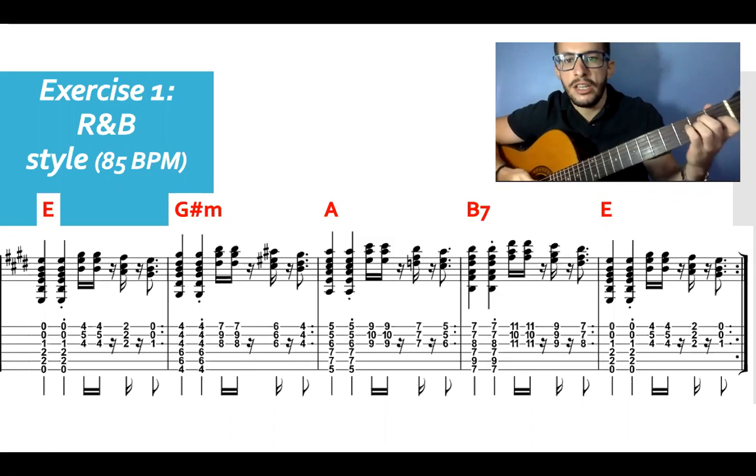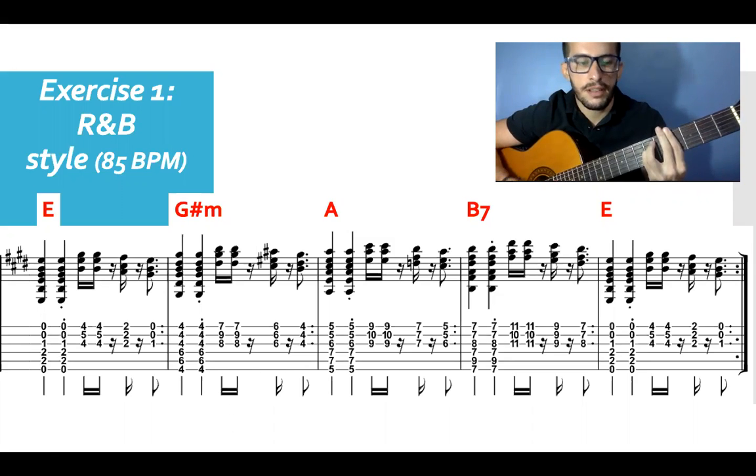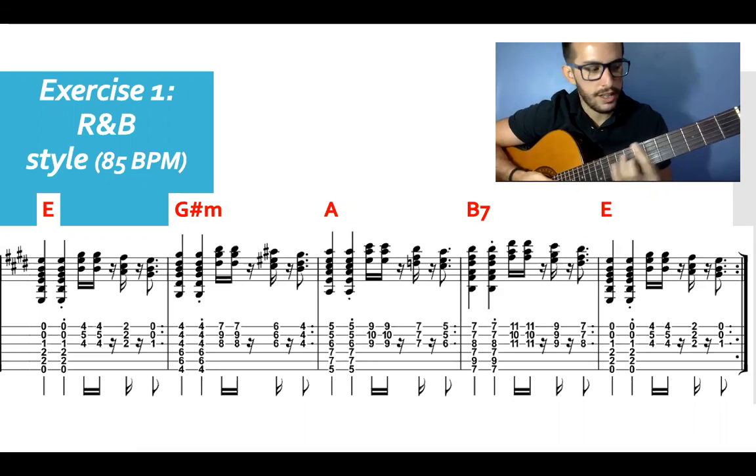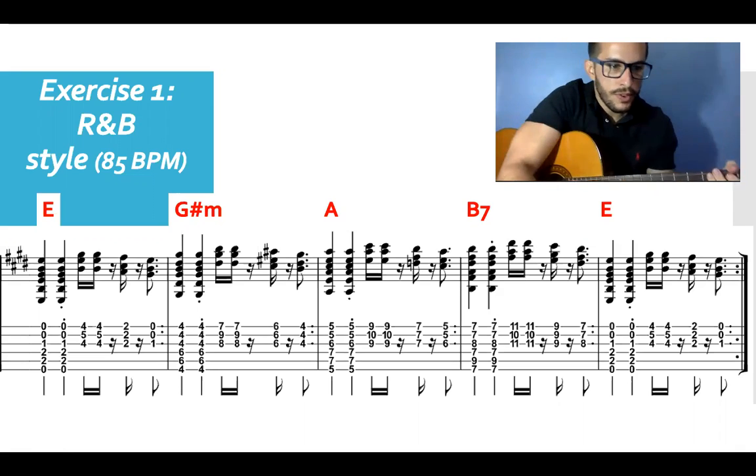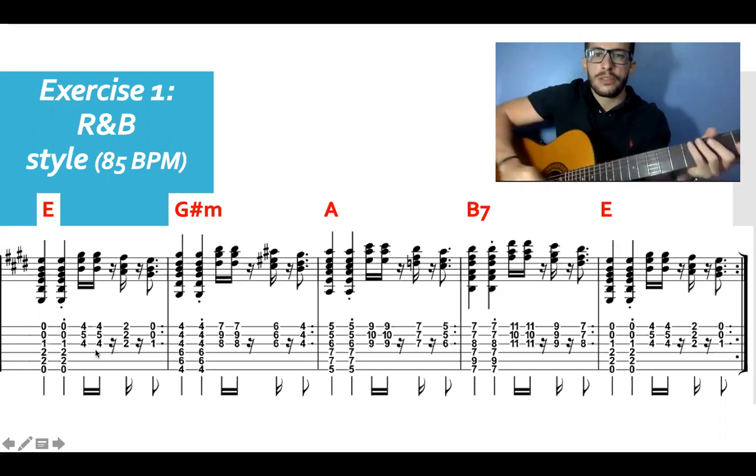We're going to be using E chord, then G sharp minor, then A, then B7, and finally E again. So the first bar you have the E chord two times, but in the second time you see there's a dot right here that's called staccato. It means you're going to play it short and very distinct. The first one is normal and the second one is staccato.